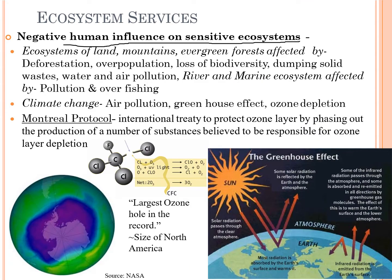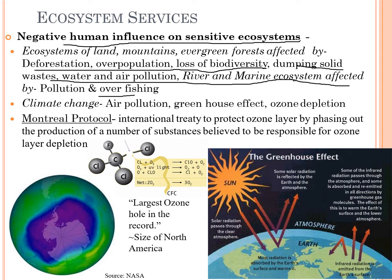Negative human influences include: land and mountain ecosystems and evergreen forests affected by deforestation, overpopulation, loss of biodiversity, dumping of solid waste, and water and air pollution. River and marine ecosystems are affected by pollution and overfishing. These are some of the negative effects caused by humans.